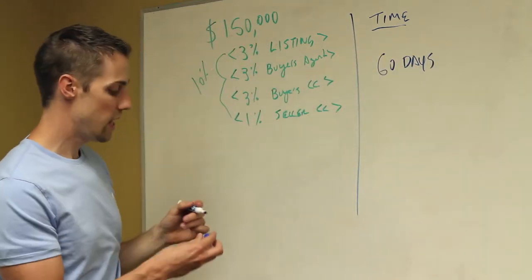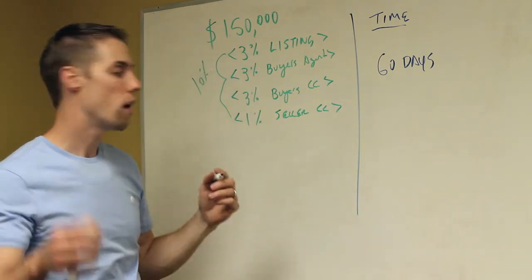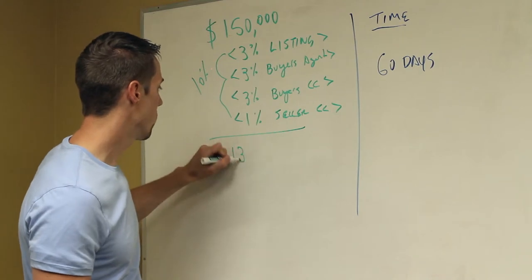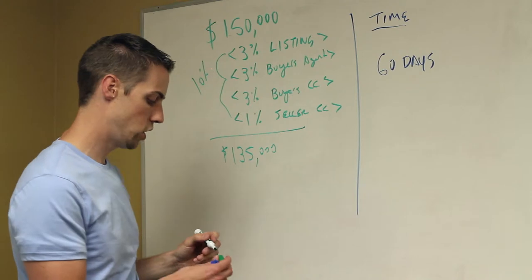It's going to take you about 60 days to get 10% off your price if they offer you full price. So 60 days to getting your $135,000 in your pocket. Now this is assuming your house is in perfect shape.